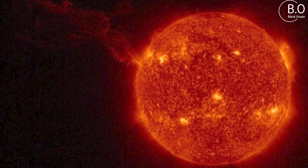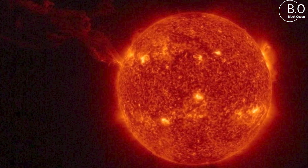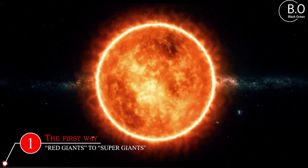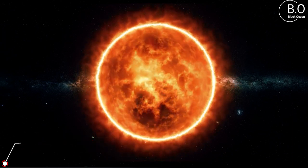The stars take two separate paths after becoming red giants. The first way: stars that have high mass, also called more massive than other stars, turn from red giants to supergiants.